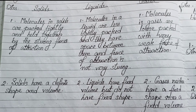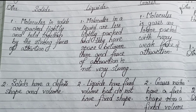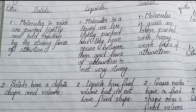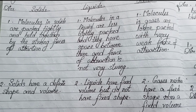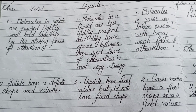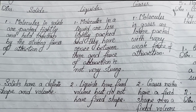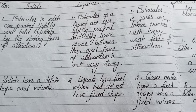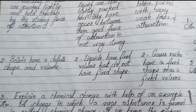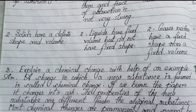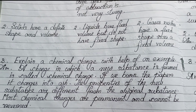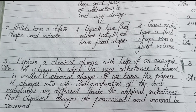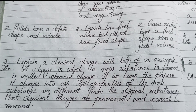Point 2 — Solids have a definite shape and volume. Liquids have a fixed volume but do not have a fixed shape. Gases neither have a fixed shape nor a fixed volume.